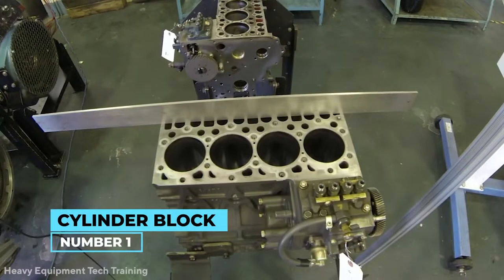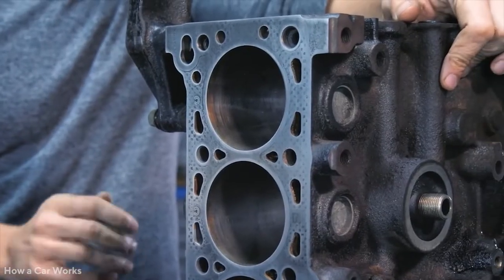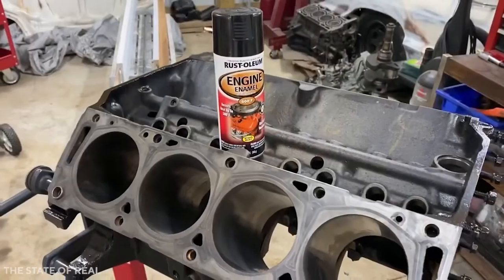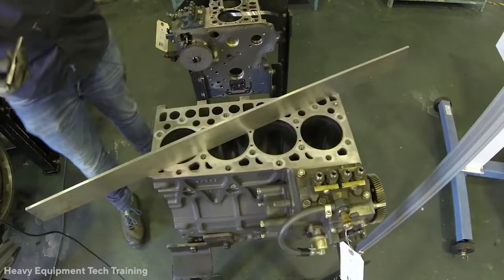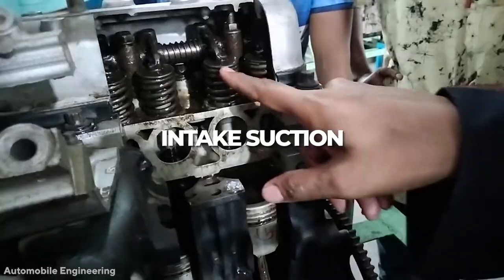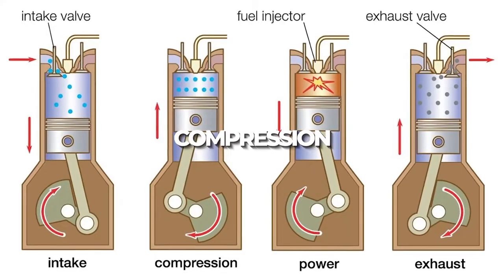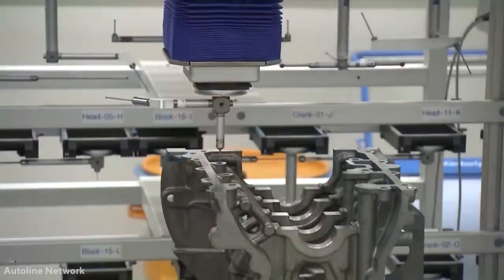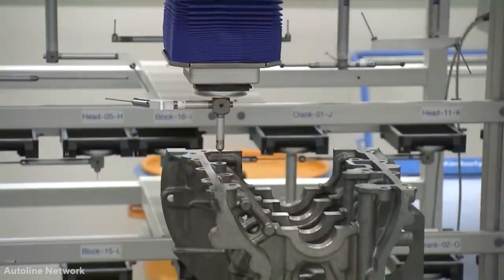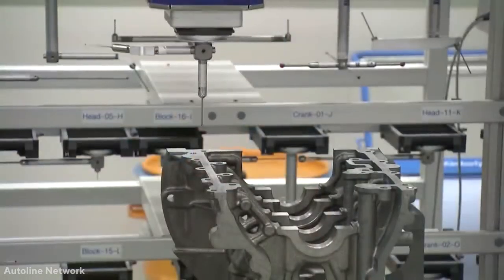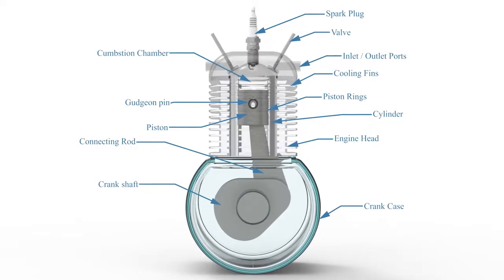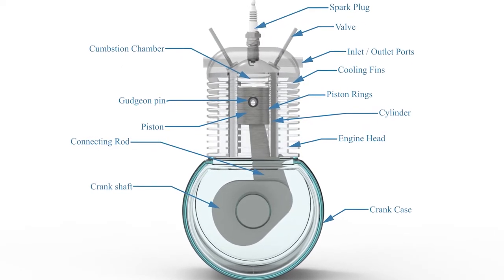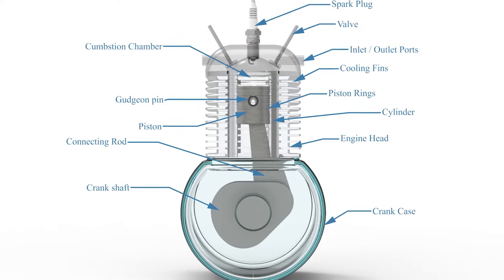Number 1: Cylinder Block. The main component of an internal combustion engine is the cylinder block. It houses all of the engine's internal functions, such as intake, suction, compression, combustion, and exhaust. In IC engines, the cylinder's function is to hold the fuel and guide the piston. The cylinders are made of cast iron and cast steel to withstand all of the temperature and pressure generated by the combustion of fuel.